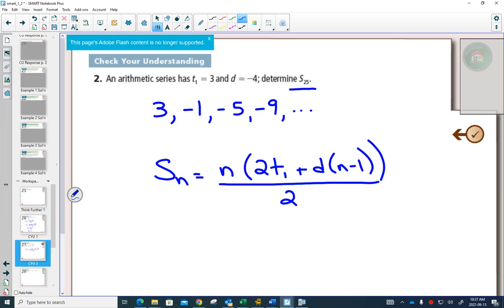What do I want to find? The sum of the first 25 of them. So can I plug in everything that I know? I know that N is 25. I know that term 1 is 3. I know that D is negative 4.